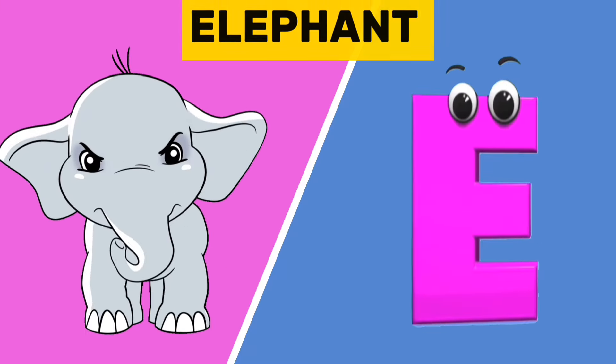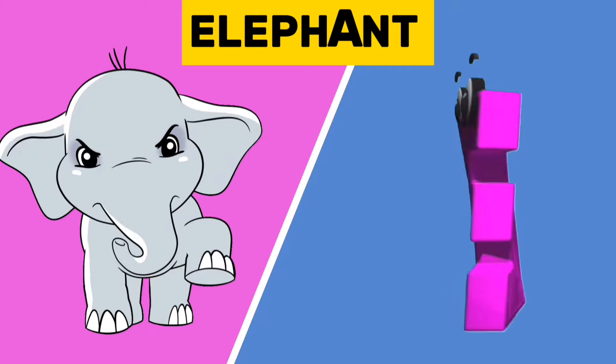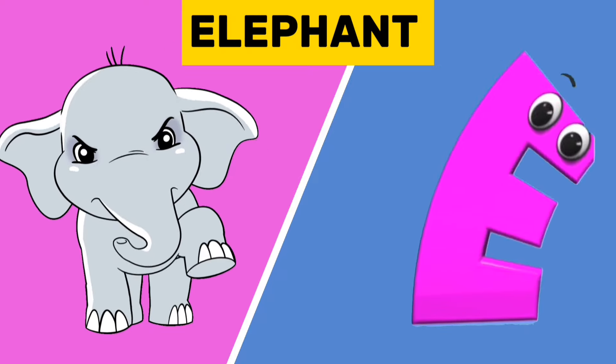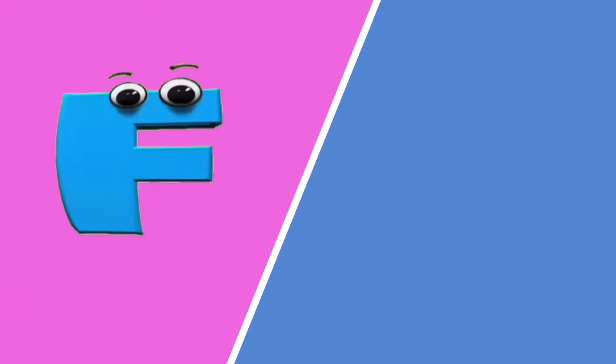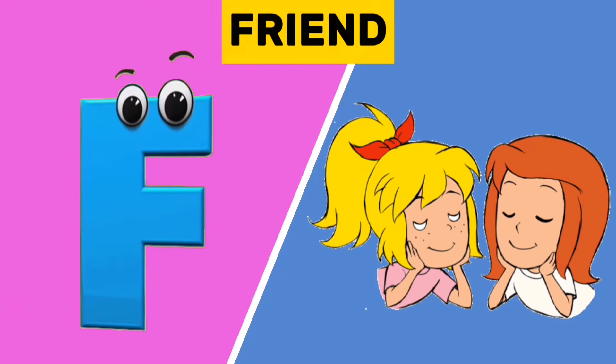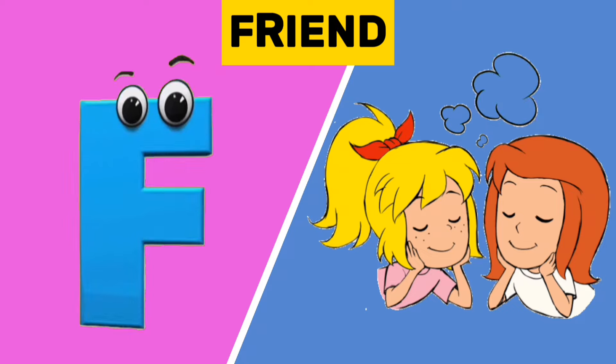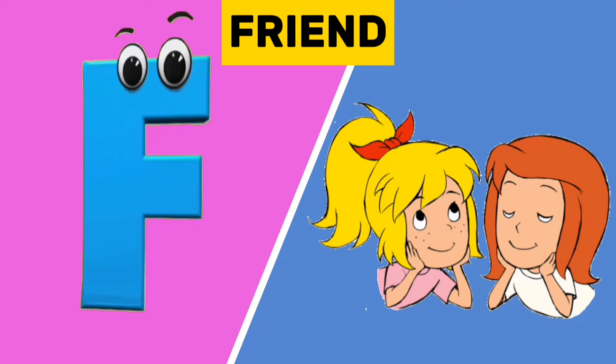E is for elephant. E, e. Elephant. F is for friend. F, f. Friend.